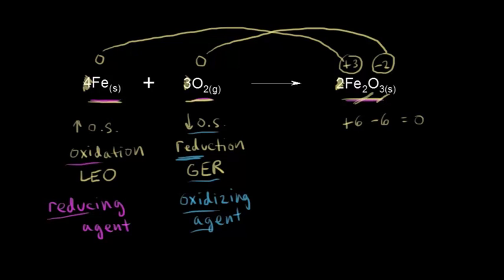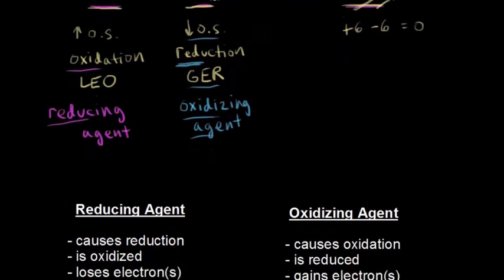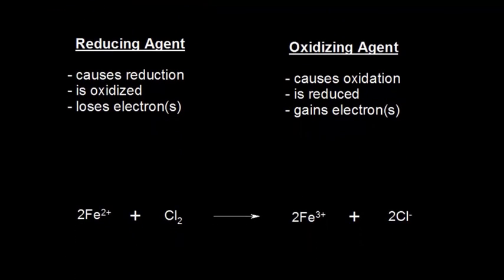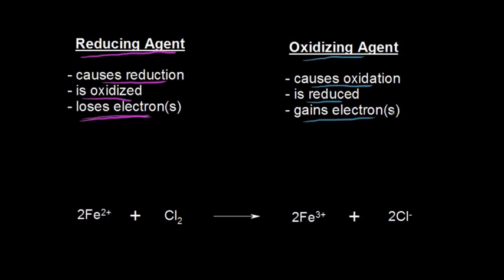Let's look at a summary table. A reducing agent is the agent for the reduction of something else, but it itself is being oxidized and therefore losing electrons. Common reducing agents are things that lose electrons easily, like metals. An oxidizing agent is the agent for the oxidation of something else, so it itself must be being reduced — gaining electrons. Common oxidizing agents are very reactive nonmetals, like oxygen.